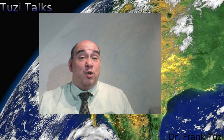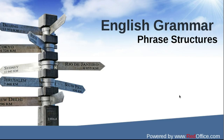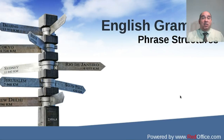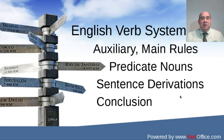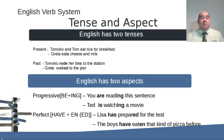Greetings all and welcome back to another session here at TwosieTalks. Today we're going to be jumping into a little bit of English grammar. We're going to finish up our phrase structure rules and we'll be looking at more of the verb in this session and some more of the other types of small changes that need to be done called sentence derivations. Let's jump right in here and look at the English verb system.